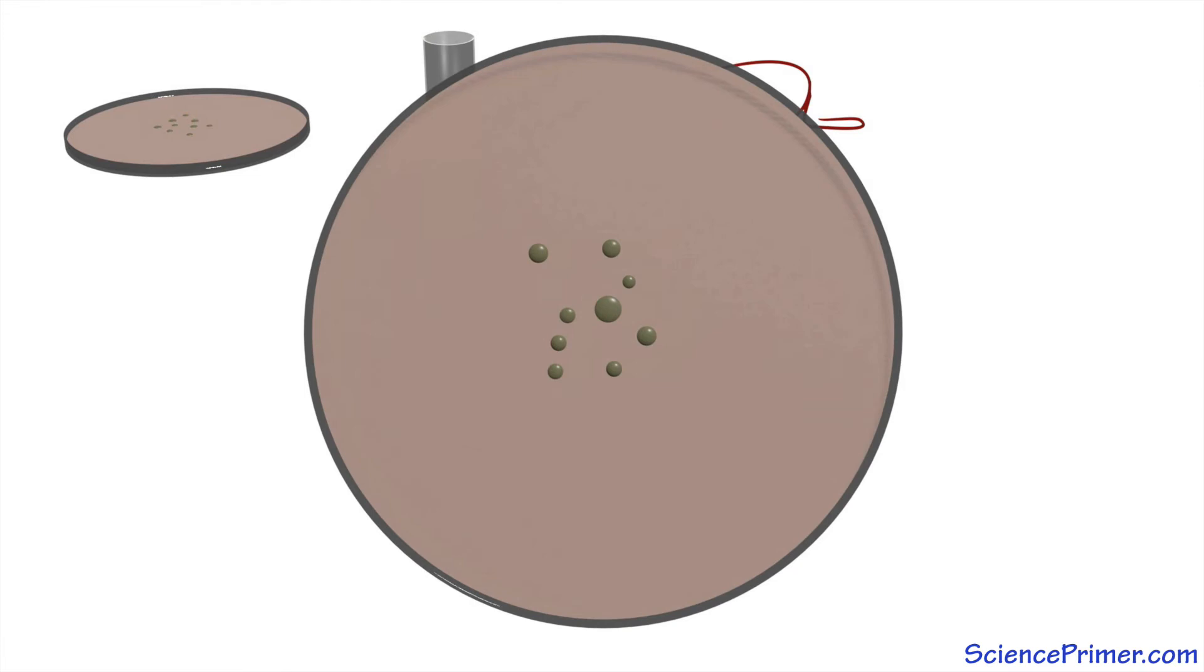If the mouse died and the strain of the same type was able to be re-isolated from the infected mouse, the strain was considered virulent. The shiny, smooth characteristic of the virulent strains is due to the presence of a polysaccharide capsule secreted by the bacteria. The capsule plays a role in virulence by helping cells avoid the host immune system.